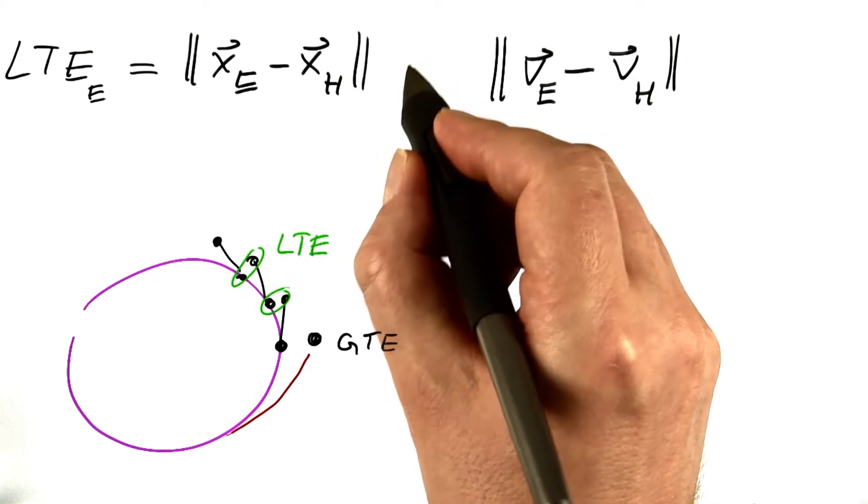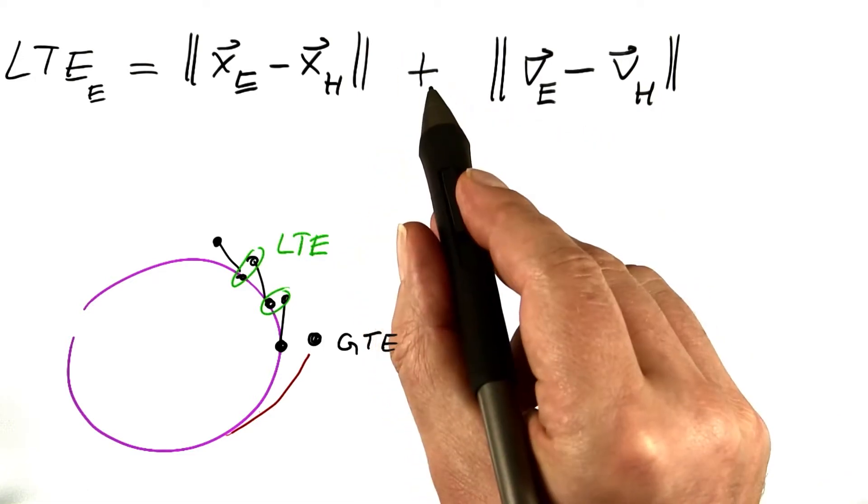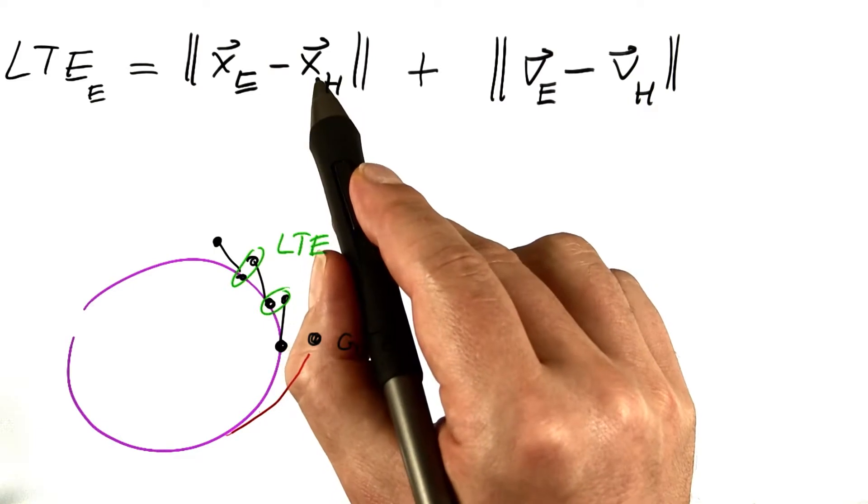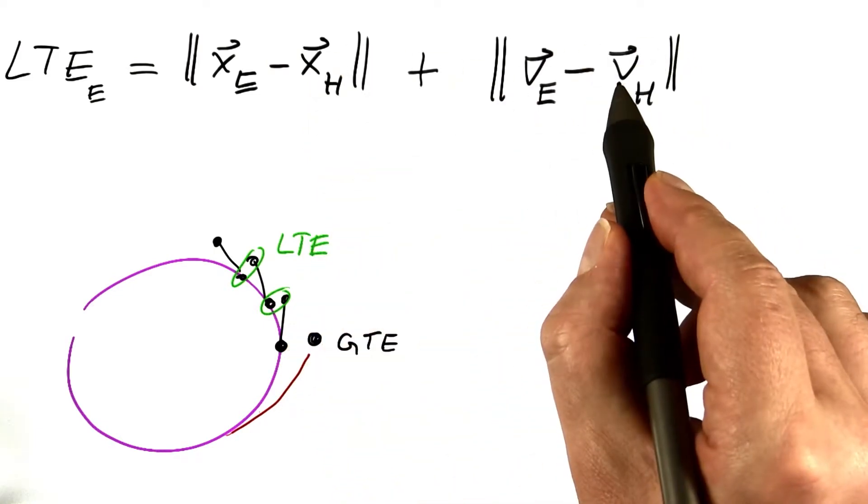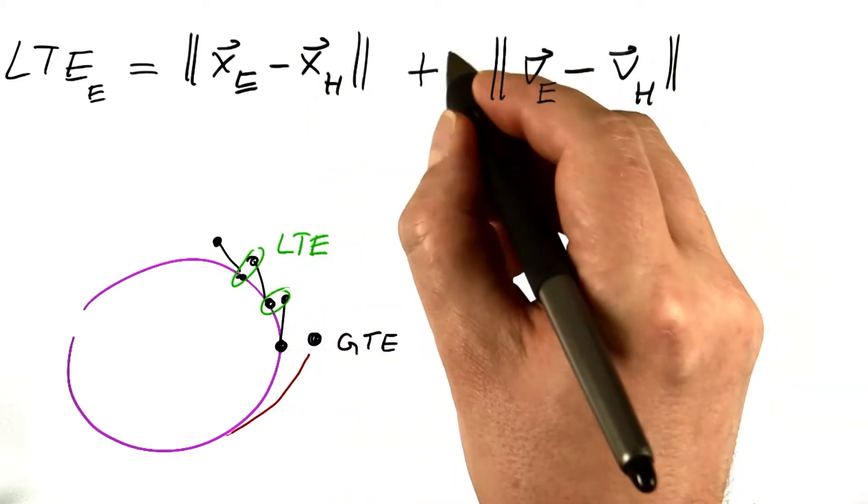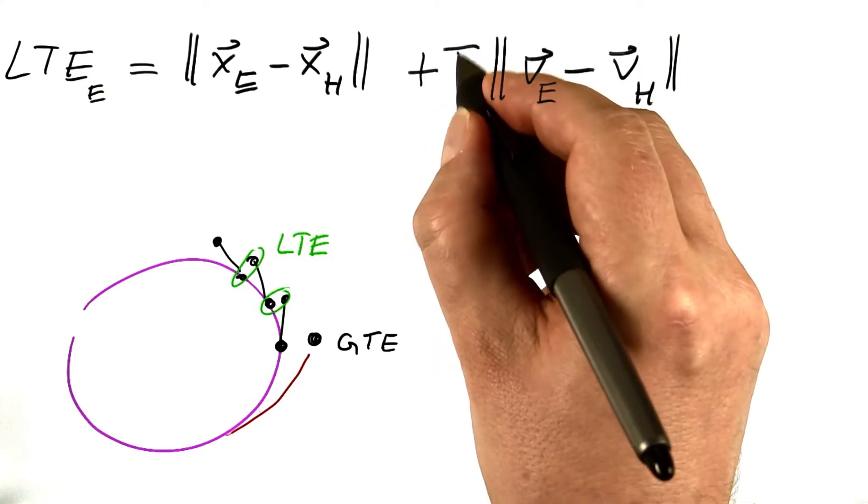You could simply form the sum here, but that would look strange for physicists. These are meters. These are meters per second.